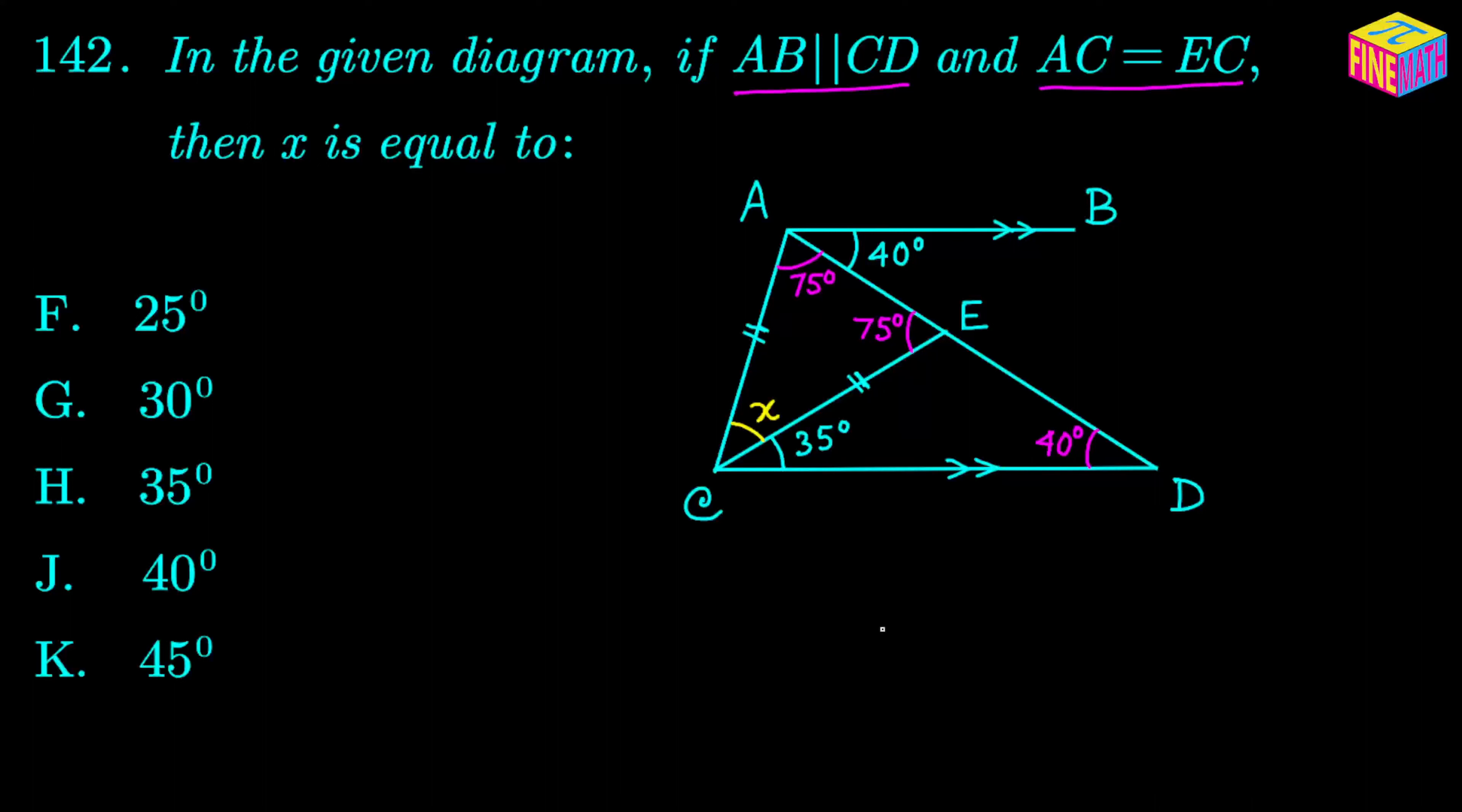So now in this small triangle ACE we know two of the angles and X is the third angle, and we know that the sum of the angles inside a triangle is equal to 180 degrees. So here we can say X plus 75 degrees plus another 75 degrees is equal to 180 degrees. And then from here we can say that X is equal to 180 degrees minus 150 degrees, which is 30 degrees, and that is our answer.